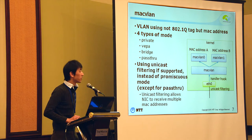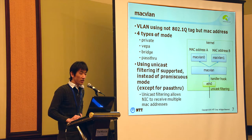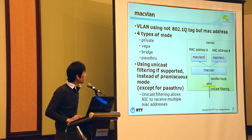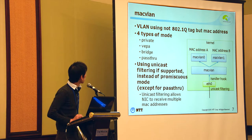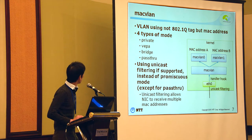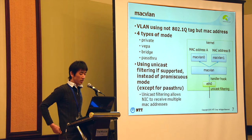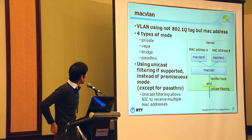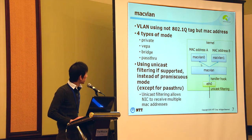The next switch is MACVLAN. MACVLAN is a variant of VLAN. A normal VLAN uses 802.1Q VLAN tags to distribute received frames. MACVLAN uses the MAC address instead. MACVLAN has four modes, and there is a bridge mode, so it can work as a bridge. MACVLAN uses the unicast filter list if it is supported on the physical device instead of promiscuous mode, since the unicast filter list allows receiving multiple MAC addresses.